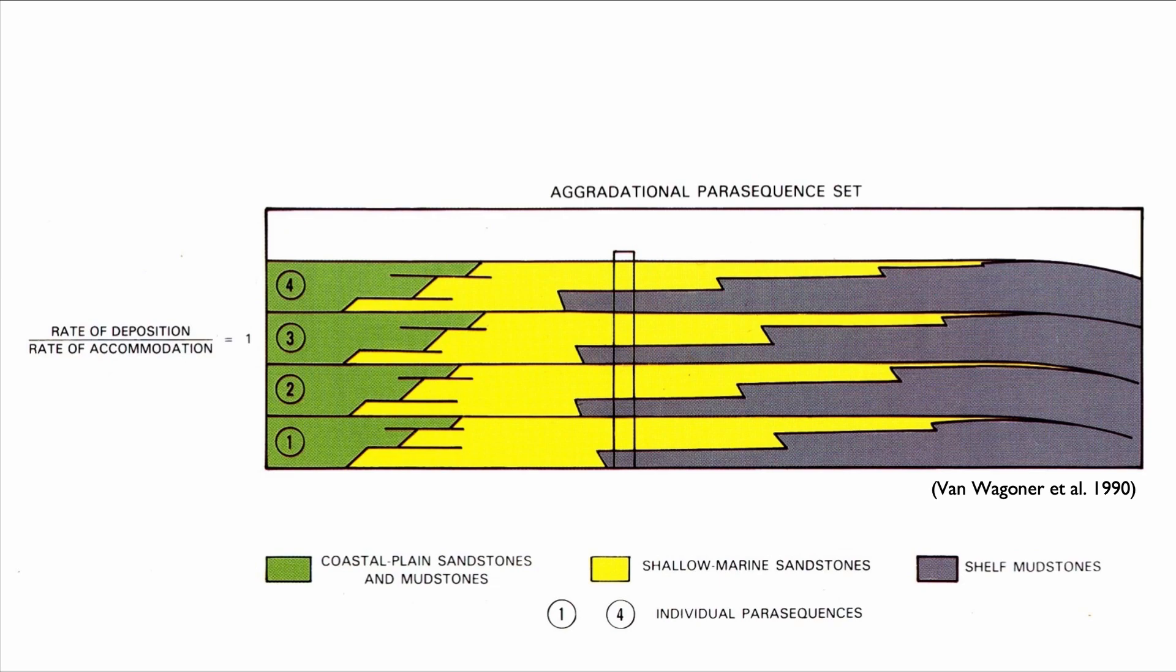There is also the case where each parasequence is relatively equal. We don't really change the proportion of the shelf mudstone to shallow marine sandstone, and that is indication of aggradation, or an aggradational parasequence set.